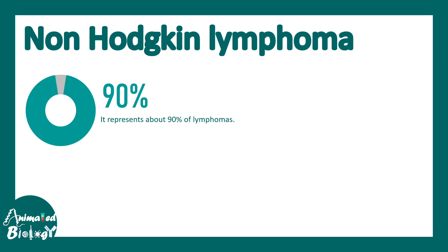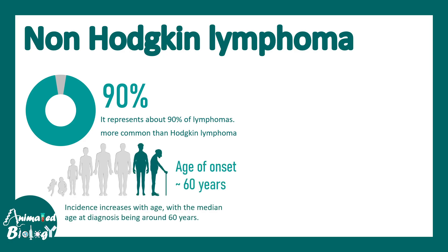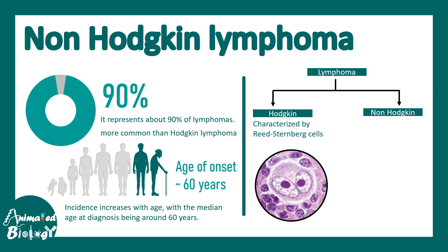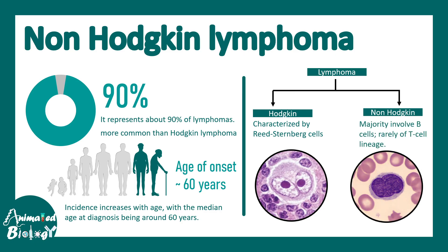Non-Hodgkin lymphoma is pretty common. It represents 90% of all lymphomas, making it obviously more common than Hodgkin's lymphoma, with an age of onset generally around 60 years. To clarify: there are two types of lymphoma — Hodgkin and non-Hodgkin. Hodgkin is characterized by Reed-Steinberg cells, also known as the owl sign. Non-Hodgkin's lymphoma majorly involves B cell-related problems.